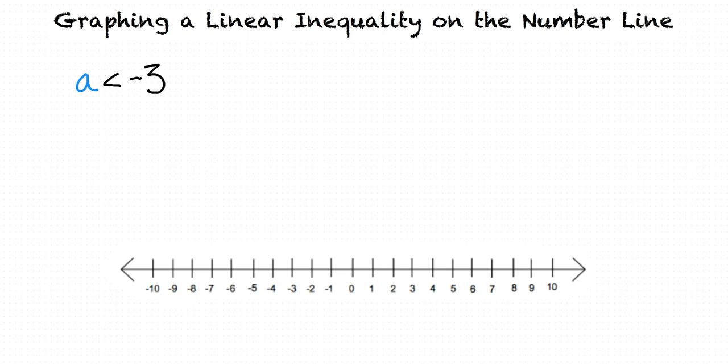What's an example of a point that would be on the graph of a is less than negative 3? Well, negative 5 is less than negative 3. So negative 5 is one value that we would want to have highlighted on the graph. However, there are other values that could work as well, and we want to graph all of them.